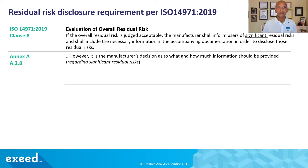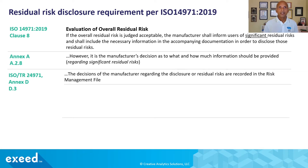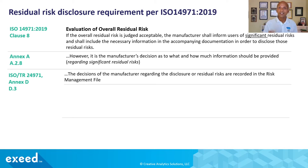In Annex A 8.2.8, it is the manufacturer's decision as to what and how much information should be provided regarding these significant residual risks — so it's up to you. Looking at ISO TR 24971, which provides more guidance and clarification, in Annex D D.3, the decisions of the manufacturer regarding the disclosure of residual risks are recorded in the risk management file. So you should document your decisions.